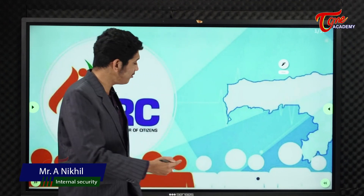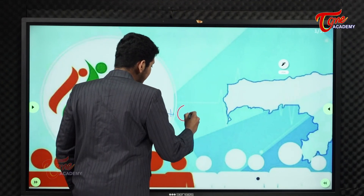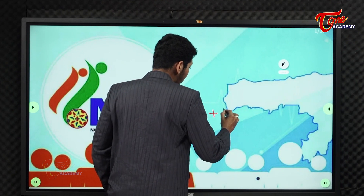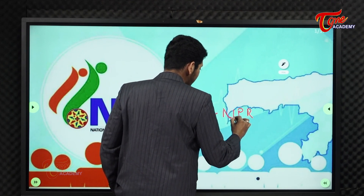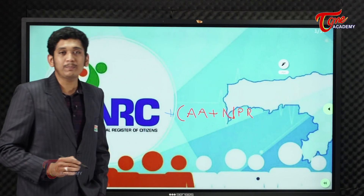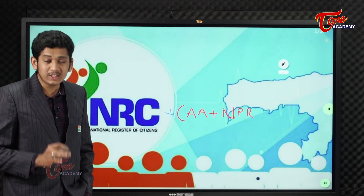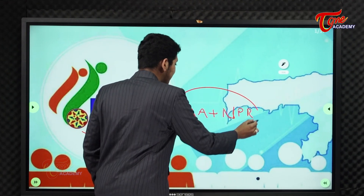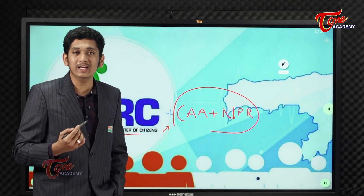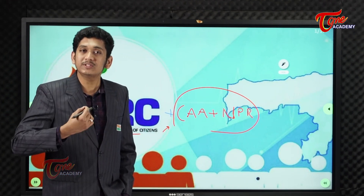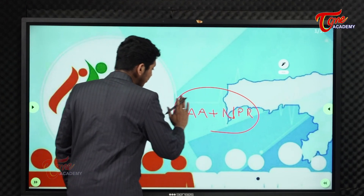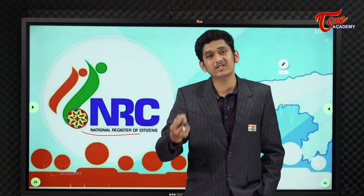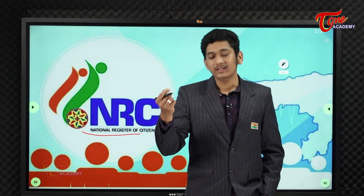NRC will be linked with the topic called Citizenship Amendment Act, CAA. With this, you will also learn about National Population Registry, NPR. But for the purpose of internal security, I would like to restrict myself to NRC. The rest of the topics — CAA and NPR — you will be learning in your polity, which is related to citizenship. However, as it is related to internal security, I will also give you a brief introduction about CAA and NPR.